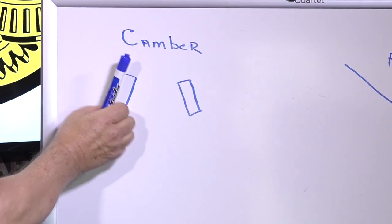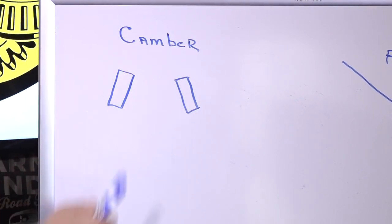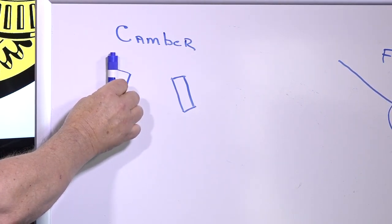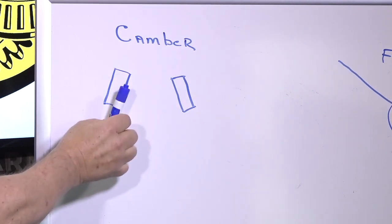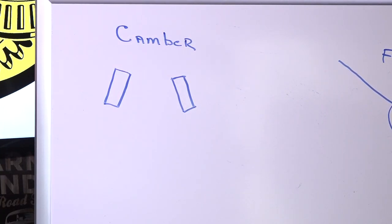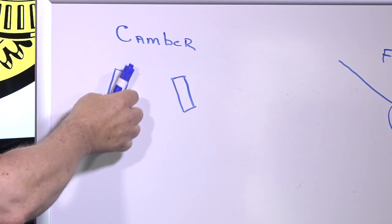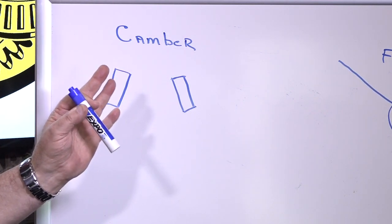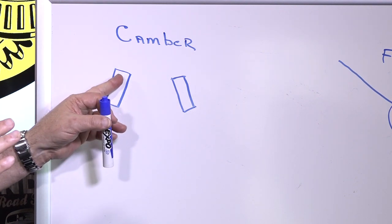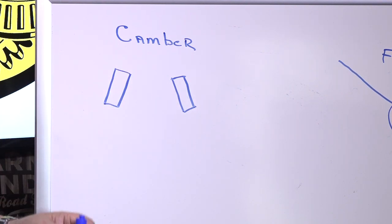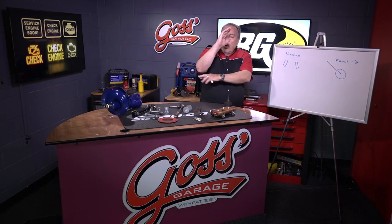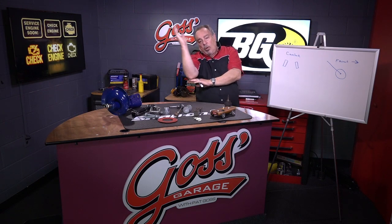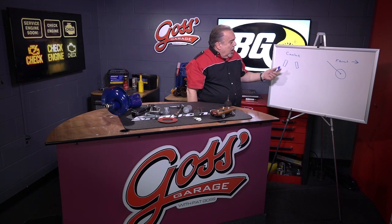Camber, if we look at the tires looking right straight at the front of the car, is the tires being tipped in at the top, straight, or tipped out. Tipped in is negative camber. Zero camber would be straight up and down, and positive would be tipped to the outside, which typically is not done because they tilt them a little bit in at the top. That way when you go around a corner you're applying the force correctly instead of over center.